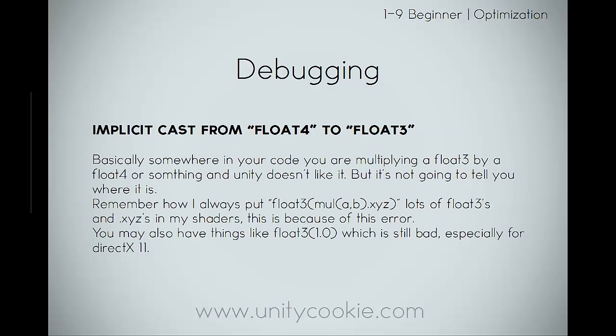'Implicit cast from float4 to float3.' Basically somewhere in your code you're multiplying a float3 by a float4 or something, and Unity does not like it - but it's not going to tell you where it is. Remember how I always put float3(molab.xyz), or sometimes I omit the float3 and just add that .xyz. If you don't have the .xyz's and you just multiply a float3 by a float4, you will likely get that error. You may also have things like a float3(1), which is still pretty bad, and especially for DirectX 11 it won't work - you have to go float3(x,y,z).